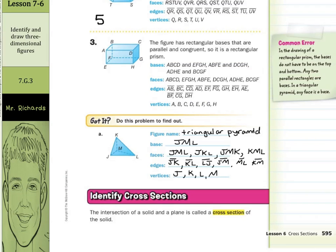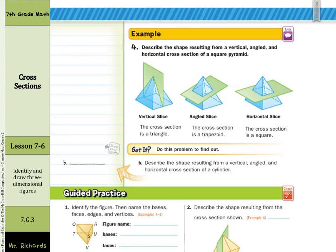Now if we zoom back out here the last part of our lesson deals with identifying cross sections. The intersection of a solid and a plane is called a cross section of the solid. So we'll be asked to describe the shape resulting from a vertical angled and horizontal cross section of a square pyramid. Well first we need to picture a square pyramid and luckily we have a square base meeting at the top so we have our square pyramid. A vertical slice takes us straight through it up and down. You can picture here that we have a triangle as that cross section. The angled slice you can see how it comes in at the angle. The cross section here here here here is a trapezoid. In a perfect horizontal slice we have a square that matches the base of the pyramid just a little smaller.